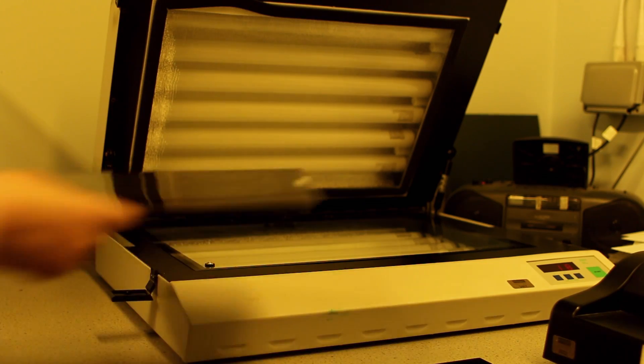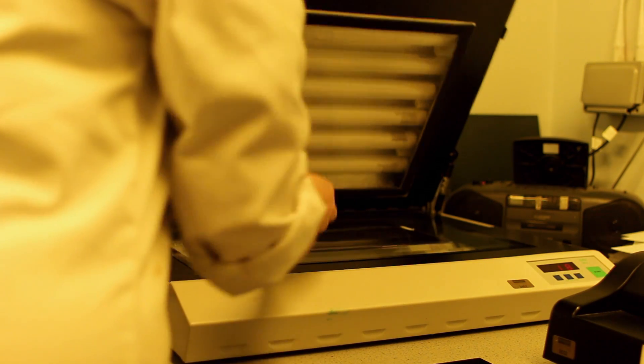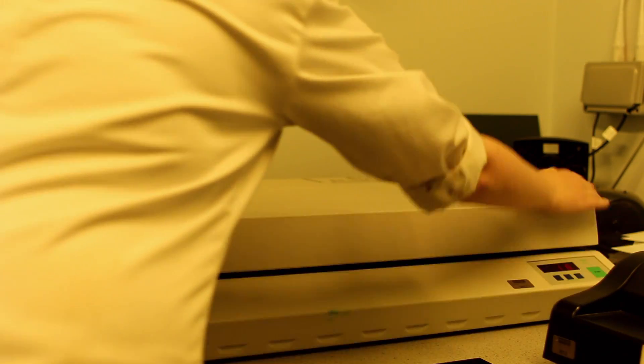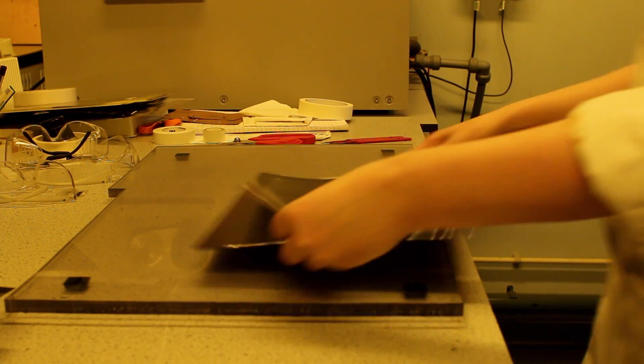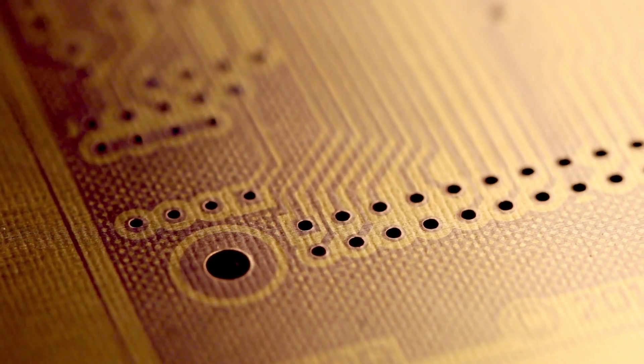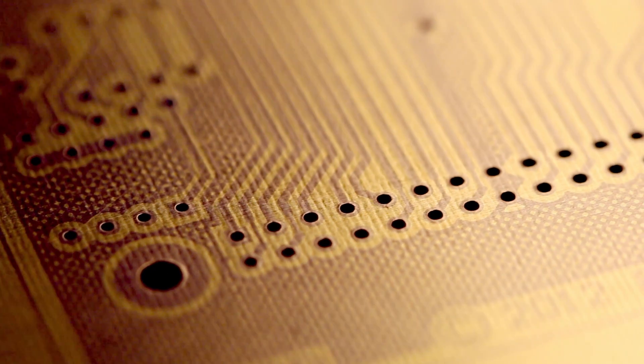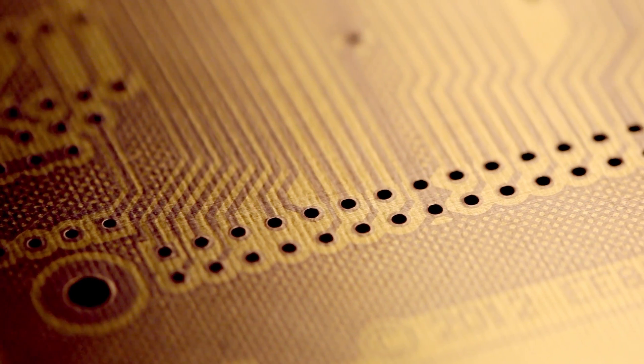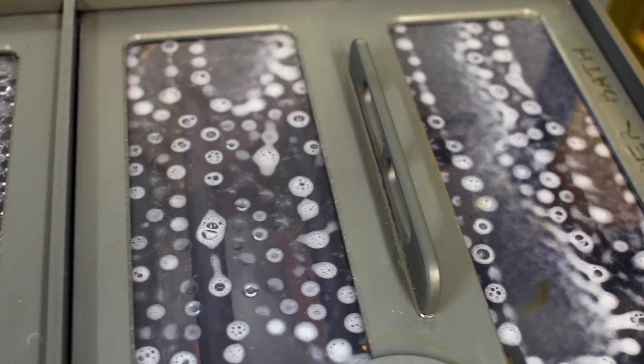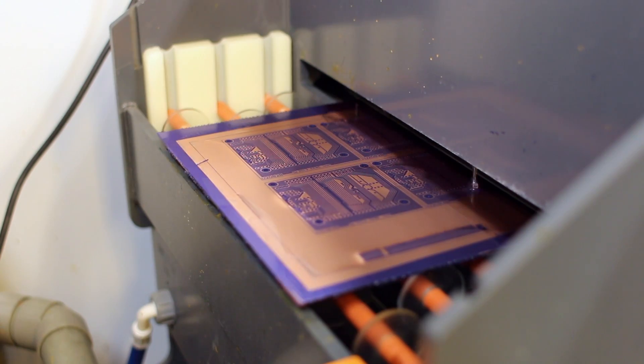The board is then exposed to ultraviolet light which hardens the areas of the photoresist layer that aren't covered by the opaque areas of the transparency. The hardening makes the photoresist resistant to the etching process. The process is then repeated for the bottom layer. The board is then passed through a developer machine to wash off the areas which haven't been exposed to UV light.